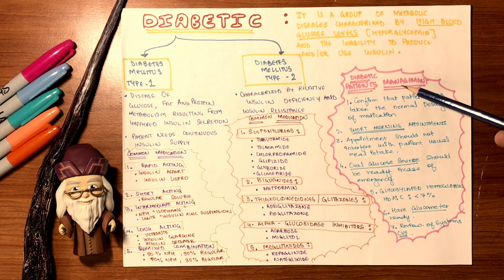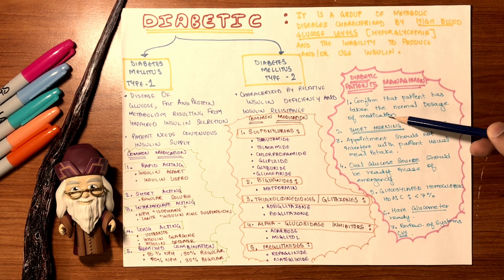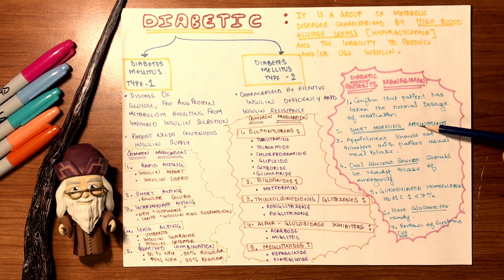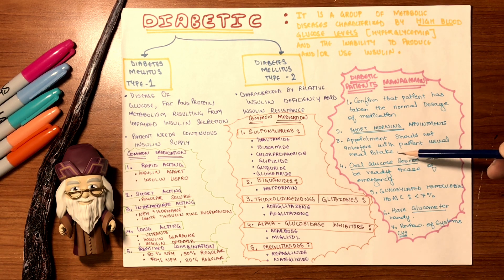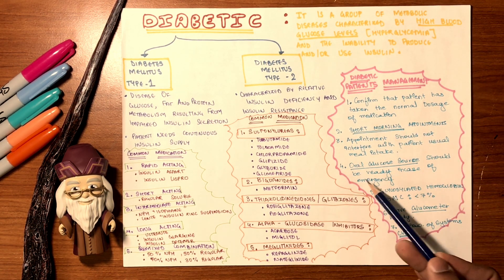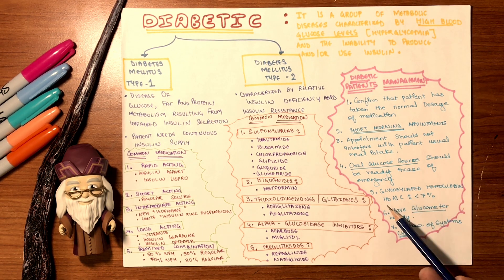For diabetic patient management, follow these steps. Number one: confirm the patient has taken their normal dose of medication. Number two: keep appointments short, preferably not in the morning. Number three: appointments should not interfere with the patient's usual meal intake, since insulin needs to act after glucose is produced from a meal. Number four: have an oral glucose source ready for emergencies, such as IV glucose.